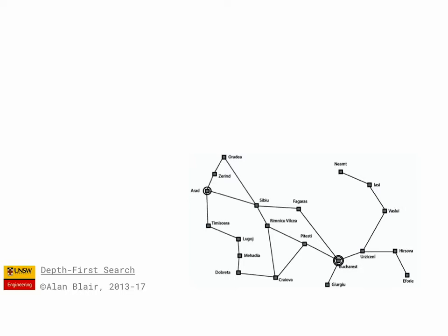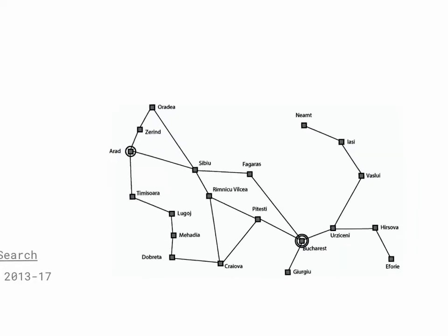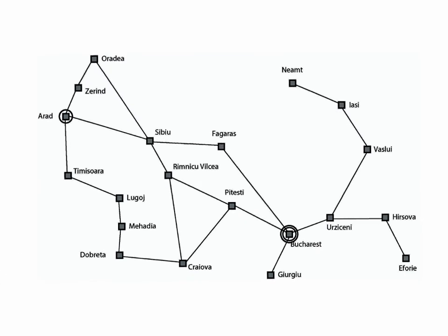But a better way to think about depth-first search is to imagine that you're actually physically walking around in the space. So we expand Arad, and then Zorint, and then Oradea, and then Sibiu, and perhaps back to Arad, but then we realize that this has already occurred along the path, so we backtrack to Sibiu.